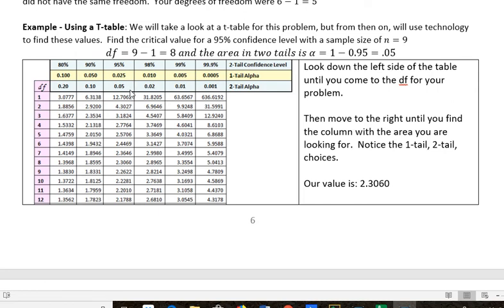And so we would just go down to 8 and see that that's 2.3060. That's how you can use a t-table to find a critical value that you need to calculate margin of error, that you need to find your confidence interval.